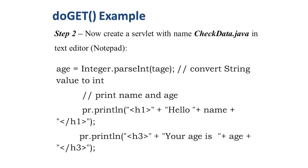We print the name and age using the pr object. We call pr.println to print Hello followed by the name variable, and pr.println to print Your age is followed by the age variable. The name and age variables are written without inverted commas as they are variable references. Hello and Your age is are string literals written in inverted commas. The first line is displayed with the h1 tag and the second with the h3 tag, which are HTML tags.